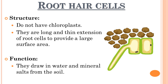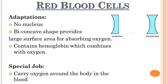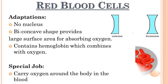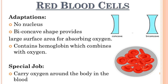Root hair cells are mostly found underground. They are very long and thin, providing a large surface area so that these cells can draw extra amounts of water, salts and minerals from the soil. Red blood cells do not have a nucleus. They are biconcave in shape — meaning two concave lenses joined together — providing a large surface area for absorbing oxygen. You can understand biconcave by joining two spoon heads back to back. Red blood cells contain a protein called hemoglobin which combines with oxygen, and their main function is to provide oxygen to all parts of the body.